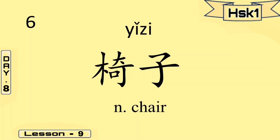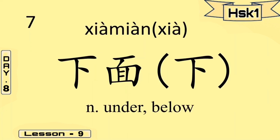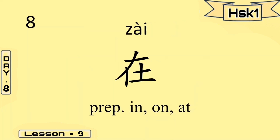Our next word is yeetha, yeetha — that means achiya. Our next word is shamiyan, shamiyan — that means under or below. We can also use just sha, sha for under or below, but in different situations. Number eight is chai, chai — that means in, on, at.